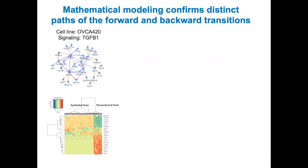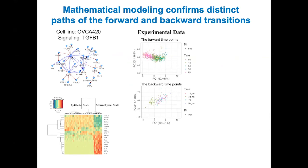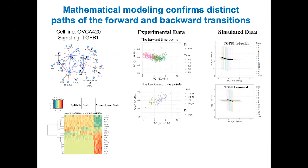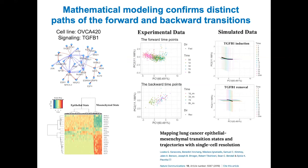Here shows the simulation results of one example, in which we indeed identified two clusters of epithelial and mesenchymal states. Interestingly, both simulation and experimental data suggest distinct processes for the forward and backward transitions, consistent with the findings of another recent study.